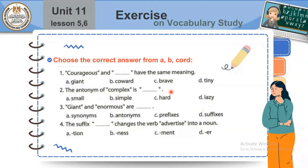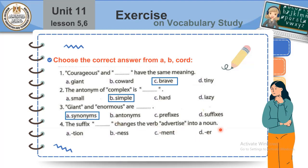Let's solve what's left. Courageous and brave have the same meaning — they are synonyms. We need to focus on memorizing synonyms and antonyms. The antonym of complex is simple. Giant and enormous are synonyms. The suffix that changes the verb 'advertise' into a noun is MENT — giving us advertisement.